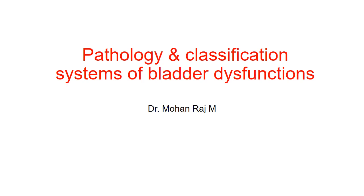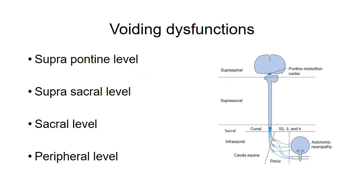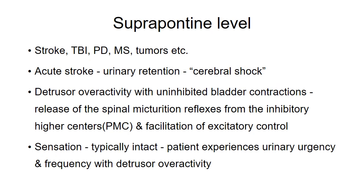Today we will discuss the pathology and classification systems of neurogenic bladder dysfunctions. First, we look into voiding dysfunctions at various levels: suprapontine level where the lesion is seen above the pons, suprasacral level between the pons and the sacrum, sacral level, infrasacral level including conus and cauda equina lesions, and peripheral level including lesions at the pelvic and bladder level.